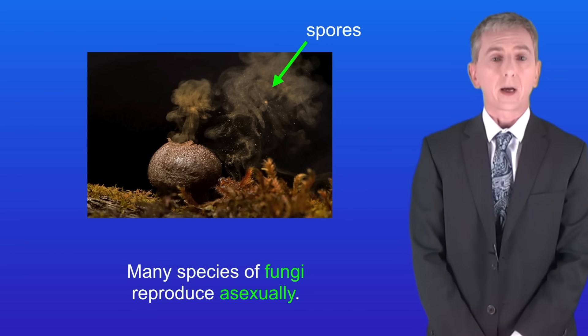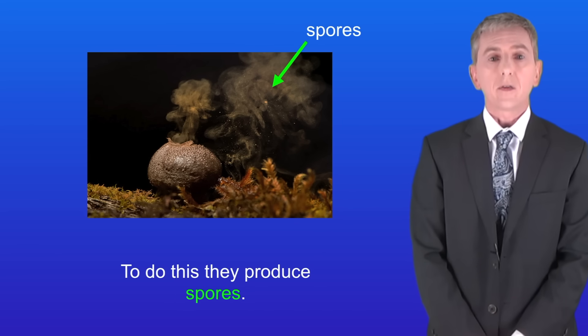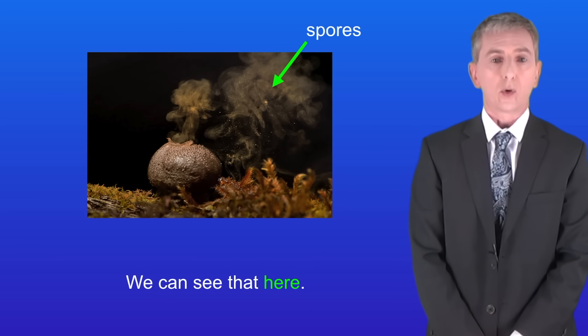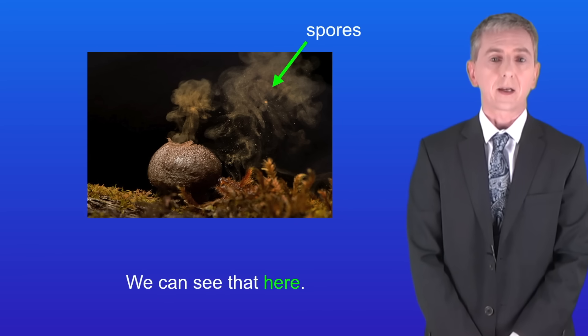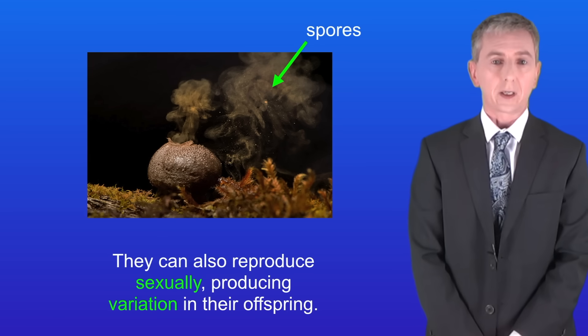Many species of fungi reproduce asexually. To do this they produce spores, as we can see here. However they can also reproduce sexually, producing variation in their offspring.